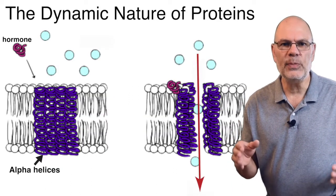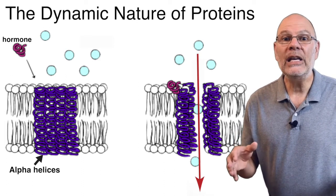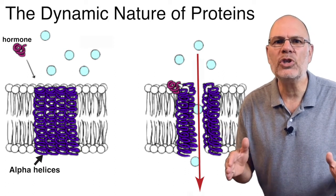The channel is built out of alpha helices that wind their way through the membrane. Alpha helices are molecular springs. When the hormone binds to the receptor,